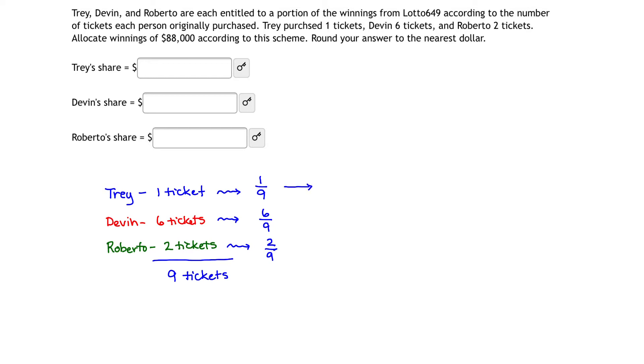Let's start with Trey. Trey purchased one ticket out of nine total tickets. Thus, his winnings should correspond in a similar manner, meaning his winnings, the portion of his winnings, should be X divided by the total, which is 88,000. One is to nine, as X is to 88,000. This proportion setup will help us figure out how much Trey is deserving.